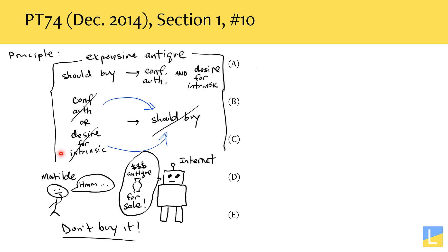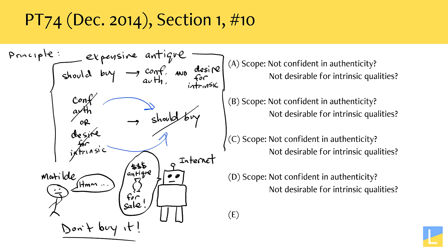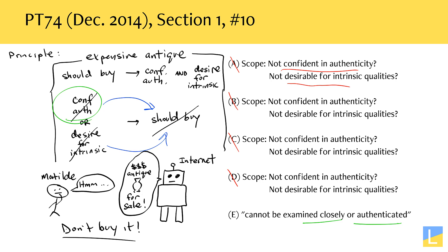If we understand what we're looking for, then answer choices A, B, C, and D should all be easy to get rid of because they do not tell us that she can't be confident it's real, and they don't tell us that she doesn't desire it for its intrinsic qualities. The only answer that gives us what we want is answer choice E, because it tells us that she cannot examine the vase closely or authenticate it — meaning she cannot be confident of the vase's authenticity. That's why E is going to help us reach this conclusion.